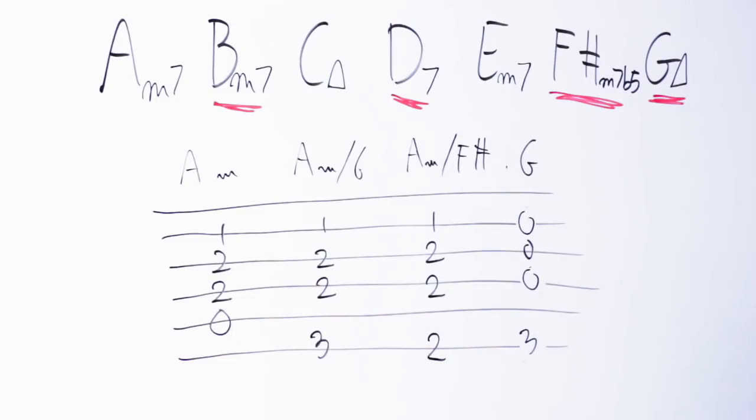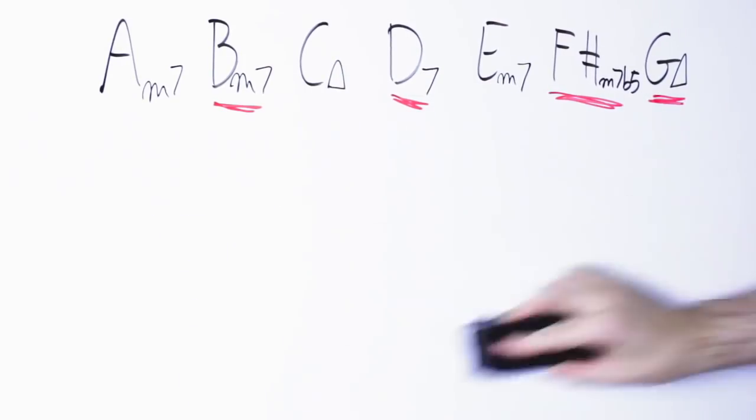Using the F sharp minor 7 flat 5 tends to sound a bit darker than the other examples, because it's a diminished chord. I personally think that this is a great sound that is underused in popular music, even if it's used very commonly in jazz and fusion. And so this is a very fertile ground for any songwriter who wants to do something new.